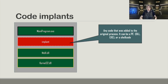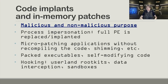So what are code implants? Any code that was added to the original process is an implant. It can be a PE such as a DLL or EXE, or a shellcode. PECF detects code implants and in-memory patches. These things can be done for malicious as well as non-malicious purposes. As malware analysts, we often encounter process impersonation where a full PE is replaced or implanted. When a process is originally run, the PE is mapped into memory, but malware can unmap this PE and replace it with its own, or load its own additionally.